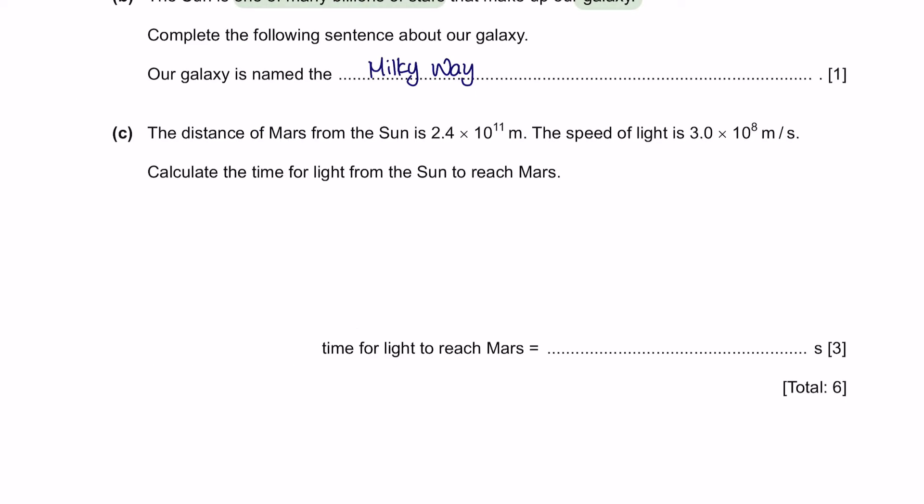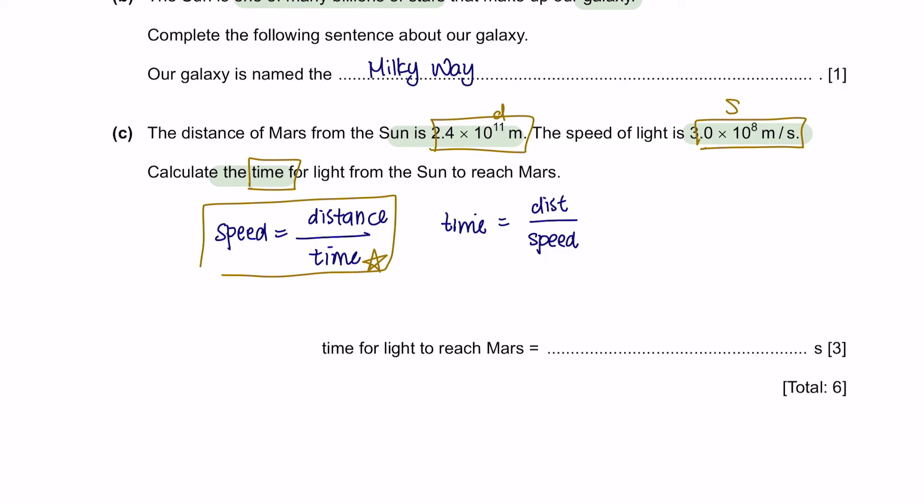Question C. The distance of Mars from the Sun is 2.4 times 10 to the power of 11 meters. The speed of light is 3.0 times 10 to the power of 8 meters per second. Calculate the time for light from the Sun to reach Mars. From the formula speed equals distance over time, we can rearrange to get time equals distance over speed, which is 2.4 times 10^11 meters over 3 times 10^8 meters per second. Make sure you're using the right units. The time obtained is 800 seconds.